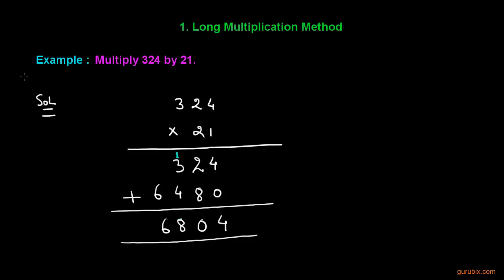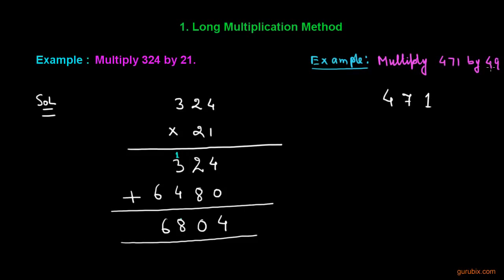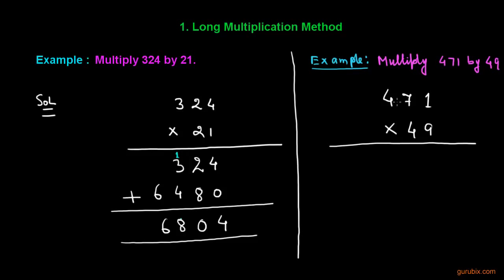Let us take another example: multiply 471 by 49. We shall write 471 here and 49 here. Now we shall multiply 471 by 9: 1 times 9 is 9; 7 times 9 is 63 — we write 3 here and carry 6.